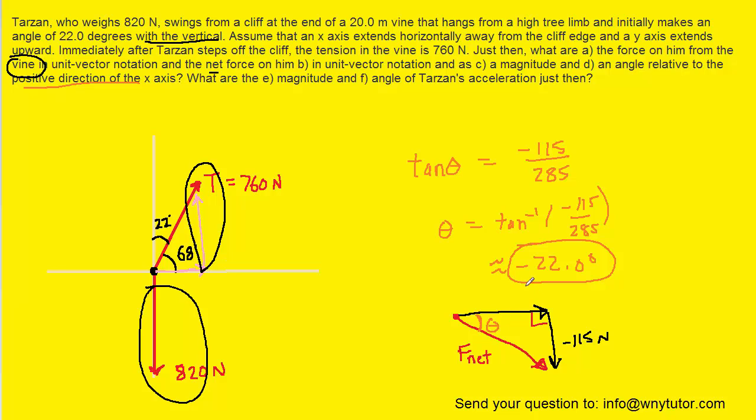So that could be the way you report the final angle. You could also say 22 degrees below the x axis, which we've written right here, or you could even say 22 degrees below the horizontal. So this way would be appropriate, this way, or even this way. So that would be the correct answer to part D.